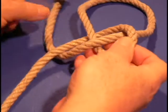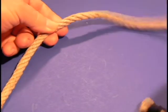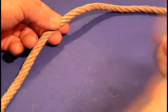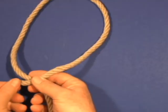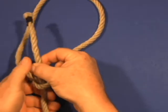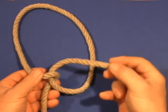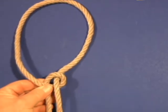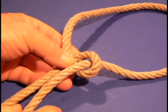Another way is to cross the standing part with the running end and create an overhand knot. Then as the overhand knot is pulled parallel to the standing part, it creates that eye.